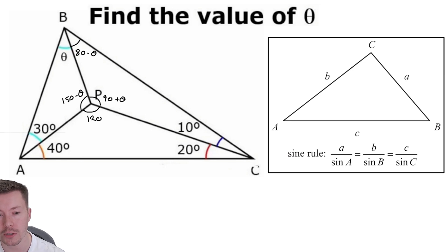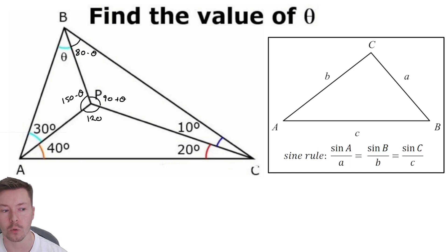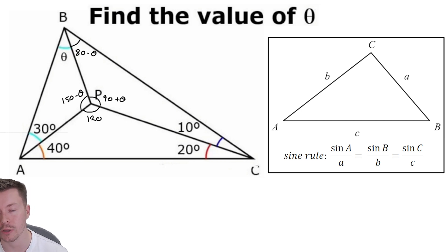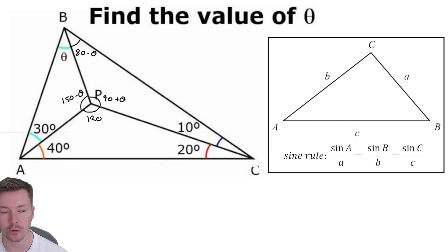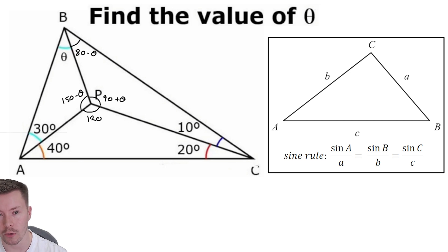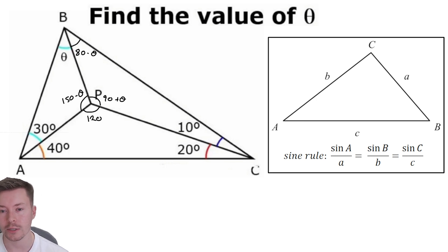What I chose to do is flip the sine rule and use it this way, because I wanted to have sine theta on the top since I'm looking for theta. With the sine rule you can just flip all of the fractions and it still works — it's not a different equation, just rearranged. We've got three parts to this equation but we only really need two; the sides and angles just have to be opposite each other.